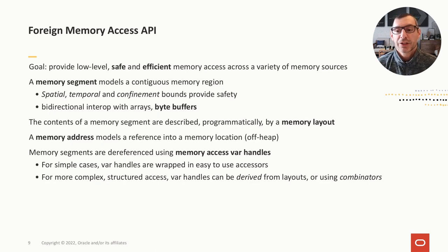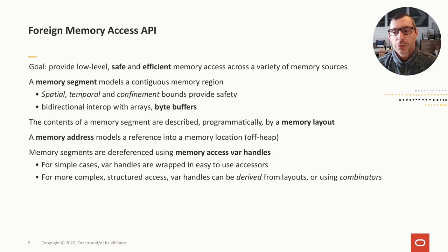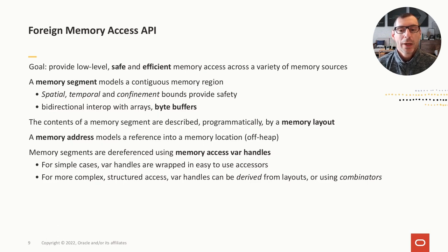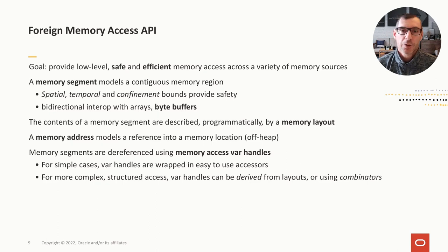Optionally, memory segments can be associated with threads so that access can be thread-confined. To reference a memory segment we have two options. The easiest is to use one of the many accessor methods provided by the memory segment class. Or, we can describe the contents of a memory segment using a memory layout and then derive a VarHandle from the layout. This VarHandle can be used to reference the memory segment — this option is more complex but much more powerful.